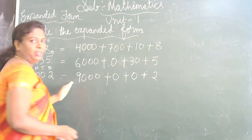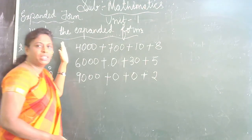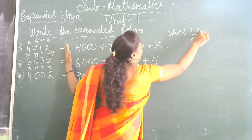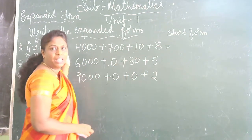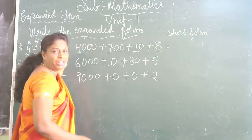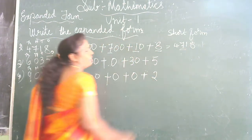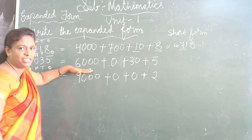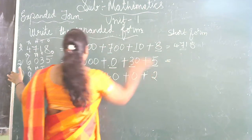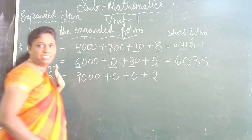Copy down. See here — this is the short form and they are asking you to write in the expanded form. For example, they will give you in expanded form and ask you to write in short form. Write all the first digits: 4, 7, 1, 8 — so the short form is 4718. Don't omit the 0 — you have to write it. For example, 6, 0, 3, 5 — the short form is 6035.